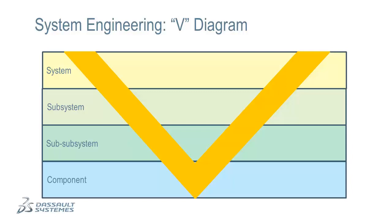The left-hand side of this diagram is the design side, where the requirements at each level are used to formulate a design for that level. The right-hand side of this diagram is the verification side, where simulations or physical tests are used to confirm that the requirements at each level have been satisfied by the design. This structure is the backbone of the system engineering process.